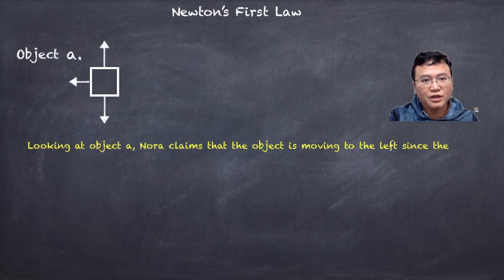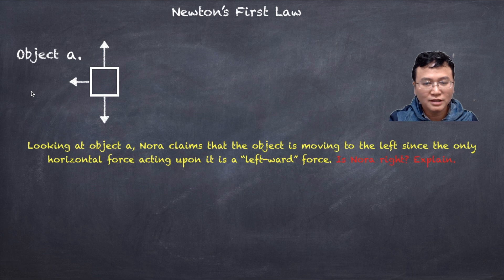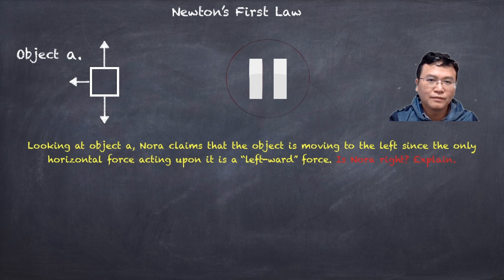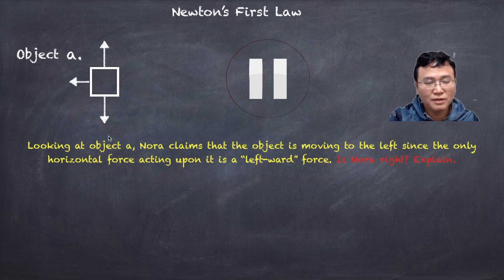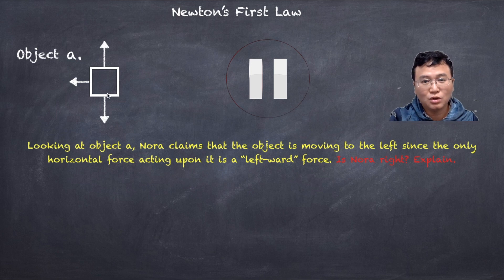Looking at object A, Nora claims the object must be moving to the left since the only horizontal force acting on it points left. However, Nora is not completely correct. The object has the ability to move to the left, but it could also be moving to the right — just slowing down. Think of a car moving to the right that steps on the brake: the force points left, but the car is still moving right, just decelerating.